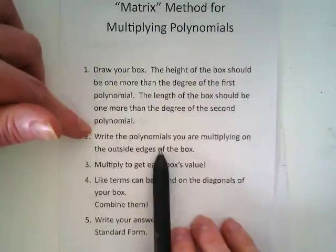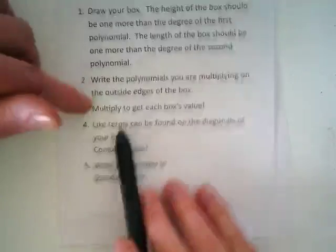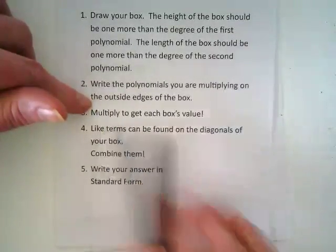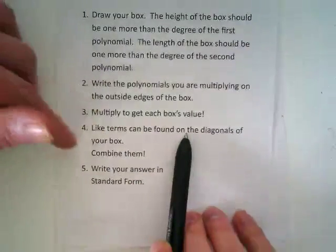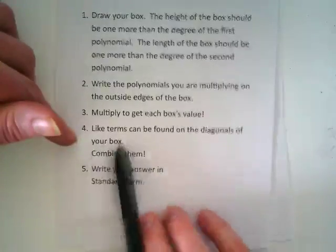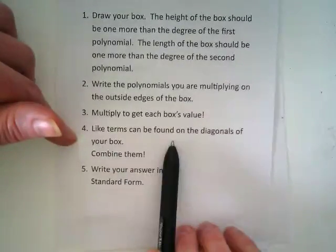Number two, write the polynomials you are multiplying on the outside edges of the box. Three, multiply to get each box's value. Four, combine like terms. They can be found in the diagonals.